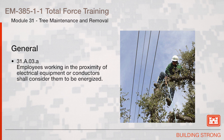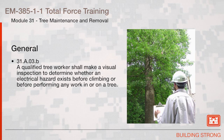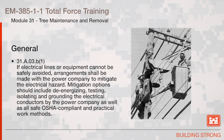General: Employees working in the proximity of electrical equipment or conductors shall consider them to be energized. A qualified tree worker shall make a visual inspection to determine whether an electrical hazard exists before climbing or before performing any work in or on a tree. If electrical lines or equipment cannot be safely avoided, arrangements shall be made with the power company to mitigate the electrical hazard. Mitigation options should include de-energizing, testing, isolating, and grounding the electrical conductors by the power company, as well as all safe OSHA-compliant and practical work methods.